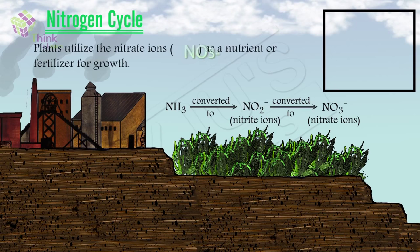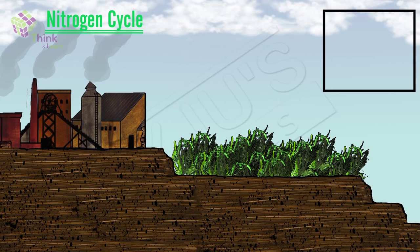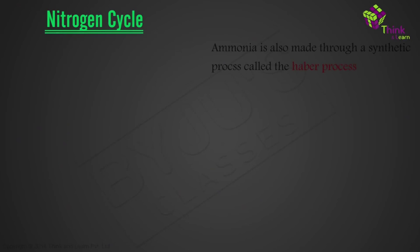Nitrogen is incorporated in many amino acids which basically react further to make proteins. Ammonia can also be made through a synthetic process known as the Haber process. Nitrogen and hydrogen are reacted under great pressures and temperatures in the presence of a catalyst to make ammonia.